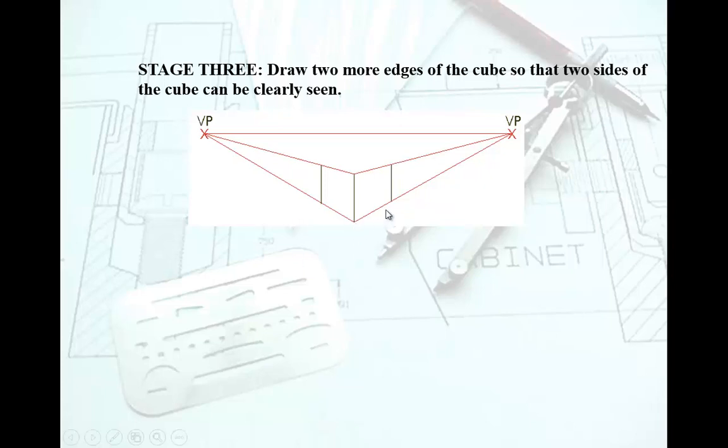Next up I'm going to plot the length of the box here and that gives me that face. Once again I'm going to repeat connecting these vertices with these vanishing points.